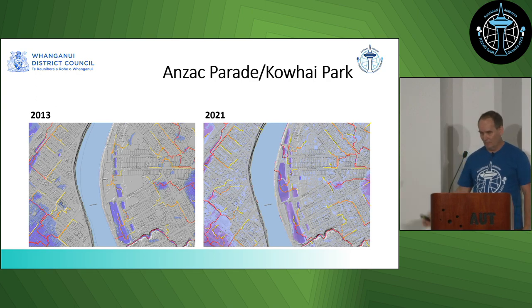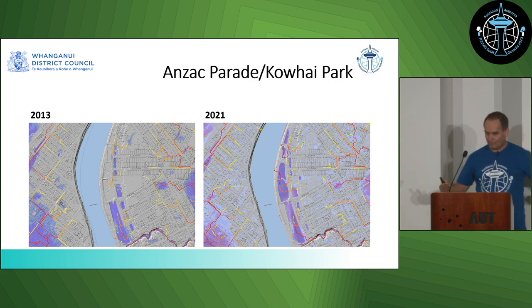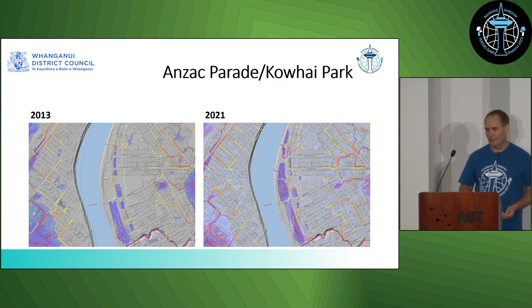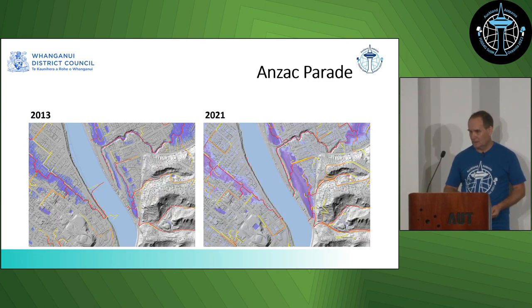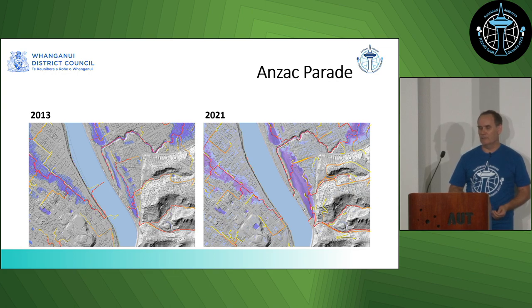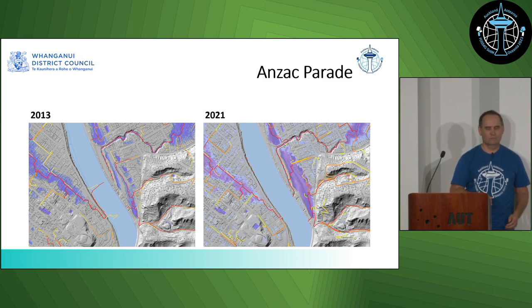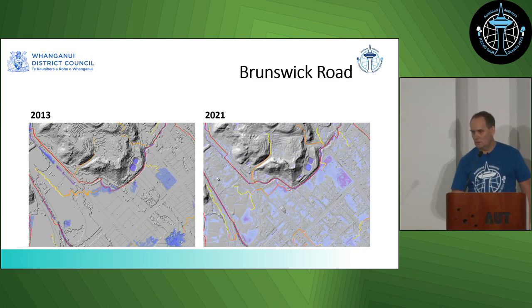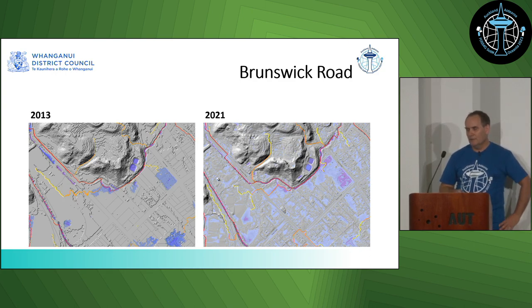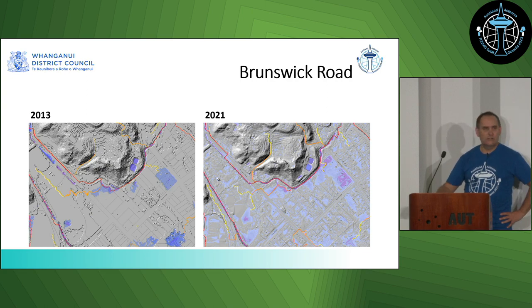Anzac Parade, on the right-hand bank of our river, has always been prone to flooding. In our 2013 data we could see there were depression areas that should have been there but weren't. The depression areas we calculated actually matched really well to what we experienced during river floods — good verification that what we were producing was reasonably accurate. In our 2021 version there's a lot more in the way of shallow depression areas that weren't really picked up in the 2013 data.